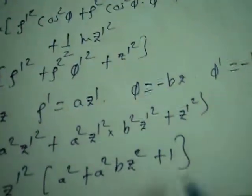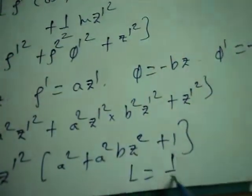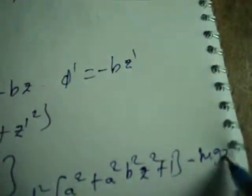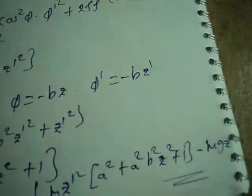So the Lagrangian L equals T minus V. Writing T as half m z-dot squared times (a squared plus a squared b squared z squared plus 1) minus the potential energy due to gravity. This is the Lagrangian for the system.